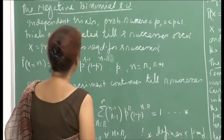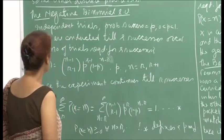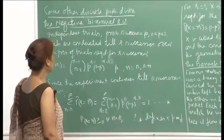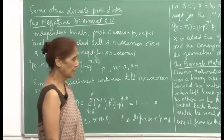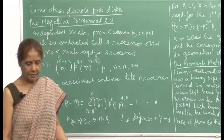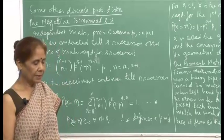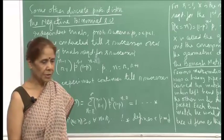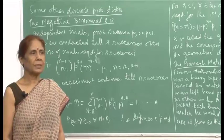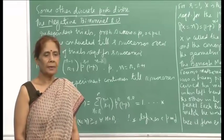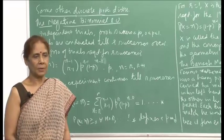I will be talking about some other discrete probability distributions. The next one is the negative binomial random variable. The name is very suggestive. We considered the binomial distribution, where the random variable was representing the number of successes, where the number of trials is fixed.